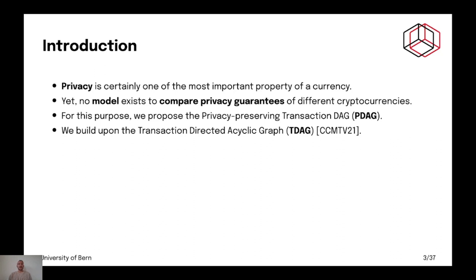Now, if you consider cryptocurrencies, most of them do not provide any meaningful level of privacy. Take Bitcoin, Ethereum, they don't have privacy per se. Of course, you can have privacy solutions such as CoinJoin for Bitcoin, Tornado Cash which is now banned in the US in Ethereum.